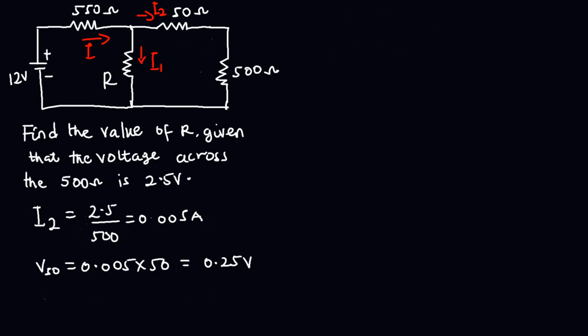At this point, to find the voltage drop across the resistor arm, I am going to apply the concept of loops. I will consider this direction to be the positive direction. So the voltage drop across the resistor arm, which I will name as Vr, will be equal to the sum of the voltage drops across the 50 ohms and the 500 ohms resistors. So we have 2.5 volts plus 0.25, which gives us a value of 2.75 volts. That will be the voltage drop across the resistor arm.